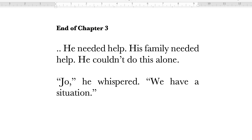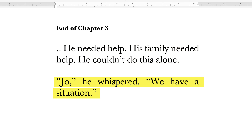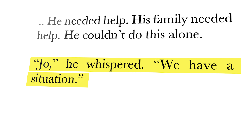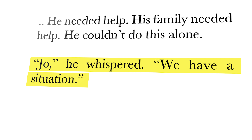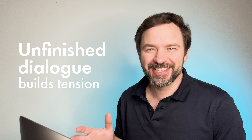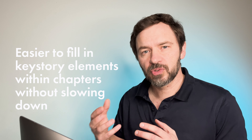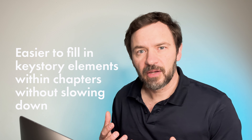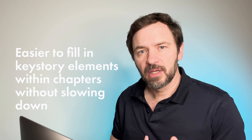At the end of the third chapter: 'He needed help. His family needed help. He couldn't do this alone. Joe, he whispered. We have a situation.' This is a great example of unfinished dialogue as that hook — that mini little cliffhanger. When someone says 'we have a situation,' they're not going to be telling you something that isn't serious, so as a reader I have to read the next chapter to figure that out. Out of these first three chapters, I'm getting hooked, and it allows the author to create more character arc, story details, plot, descriptions, and characters so the reader starts to empathize and invest.